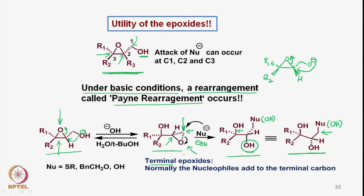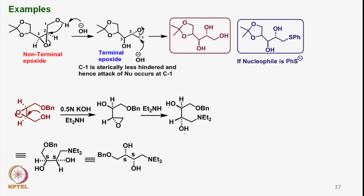One can also anticipate that the same Payne rearrangement can occur from the OH under basic conditions, opening the epoxide and going back to the starting material—which is why there is an equilibrium shown. However, if we use any nucleophile other than OH-, that nucleophile will preferentially attack onto the sterically less hindered end of the terminal epoxide. This Payne rearrangement followed by nucleophilic attack has been well exploited in organic synthesis.